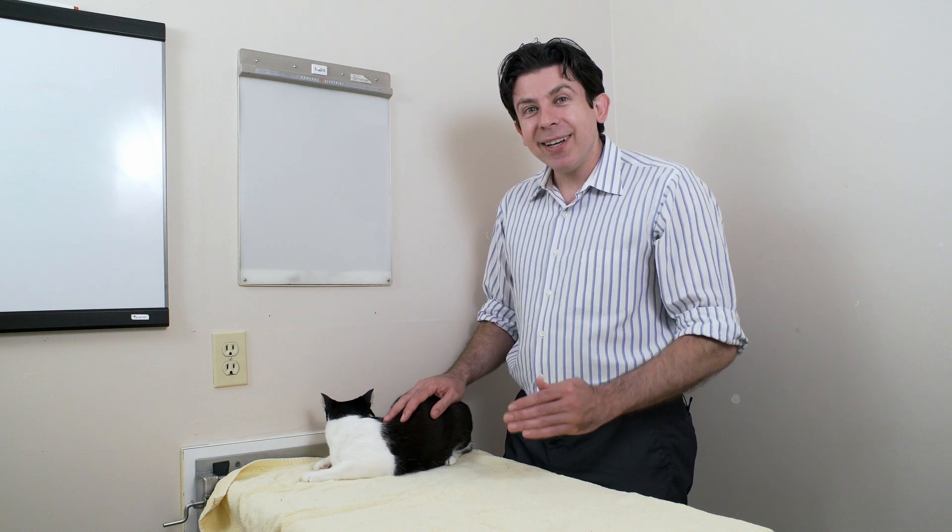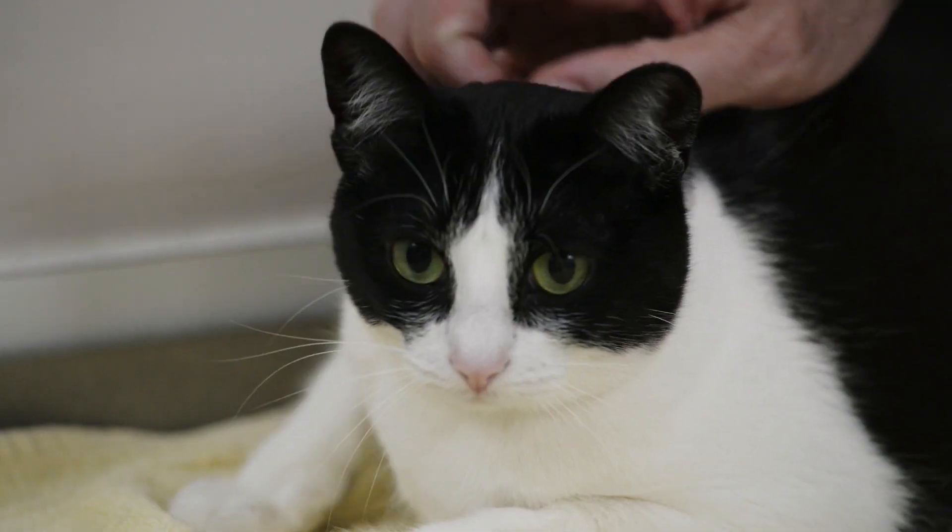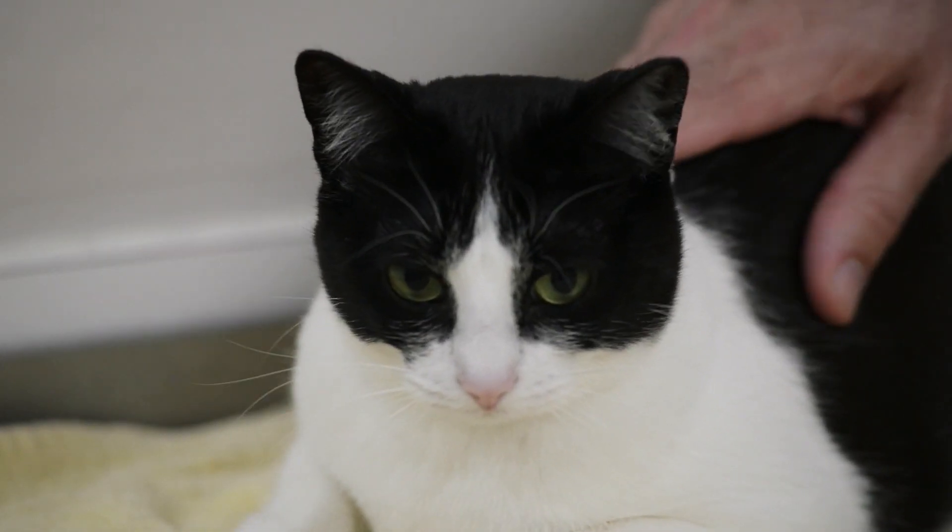But as a result of that, when they're ill, they don't show it. They try to hide it because they're kind of middle of the food chain. If a cat looks weak or sick, some predator will take it out.